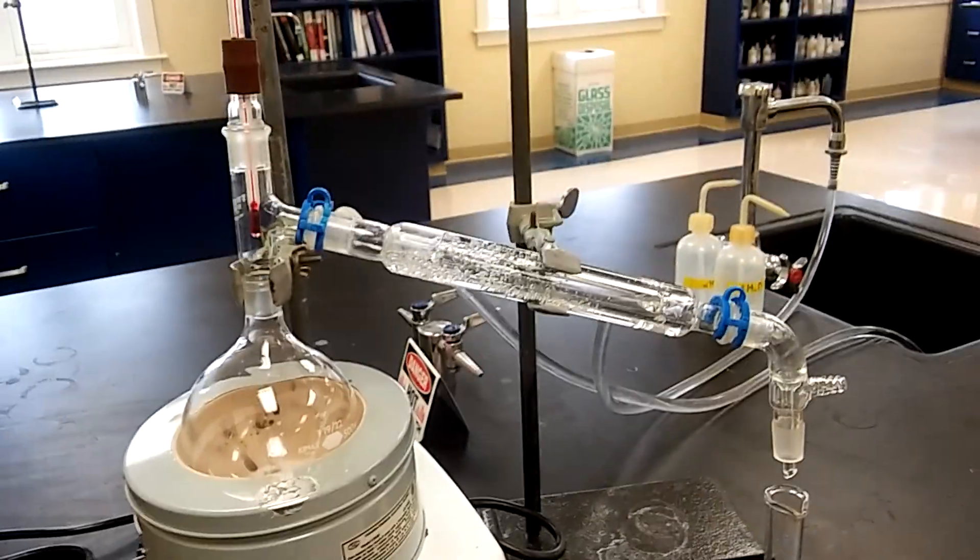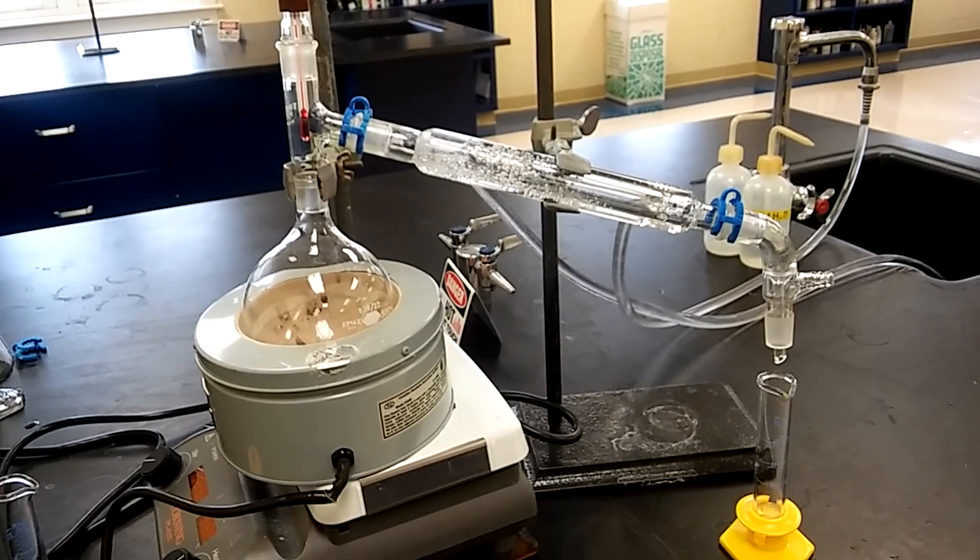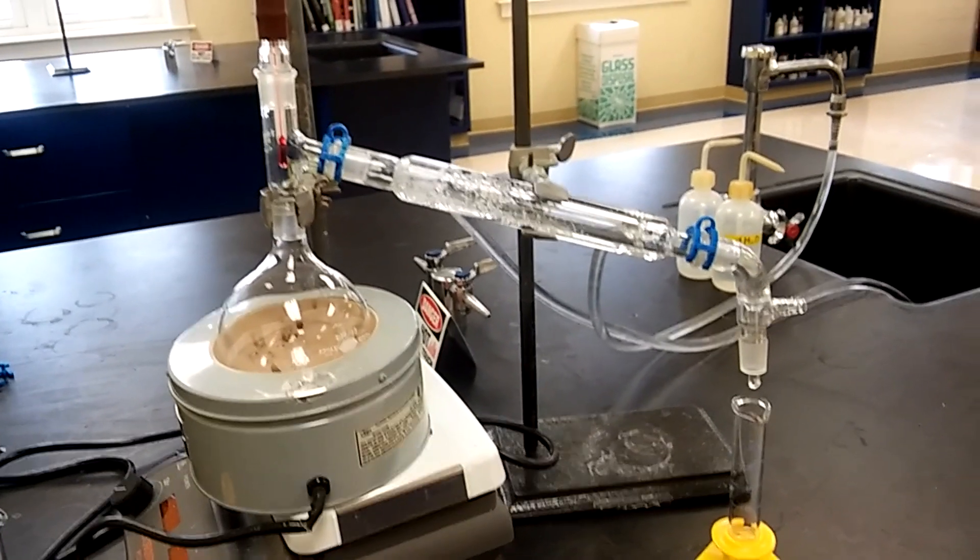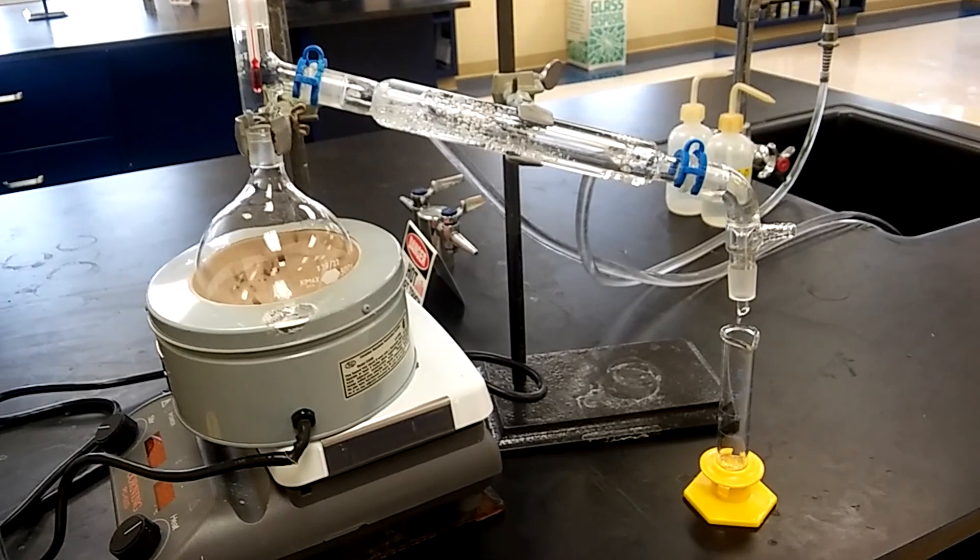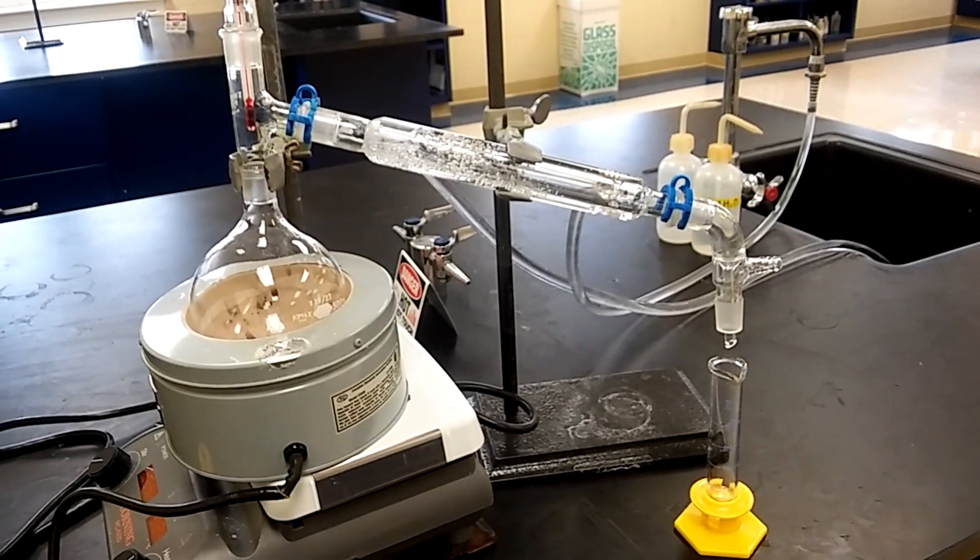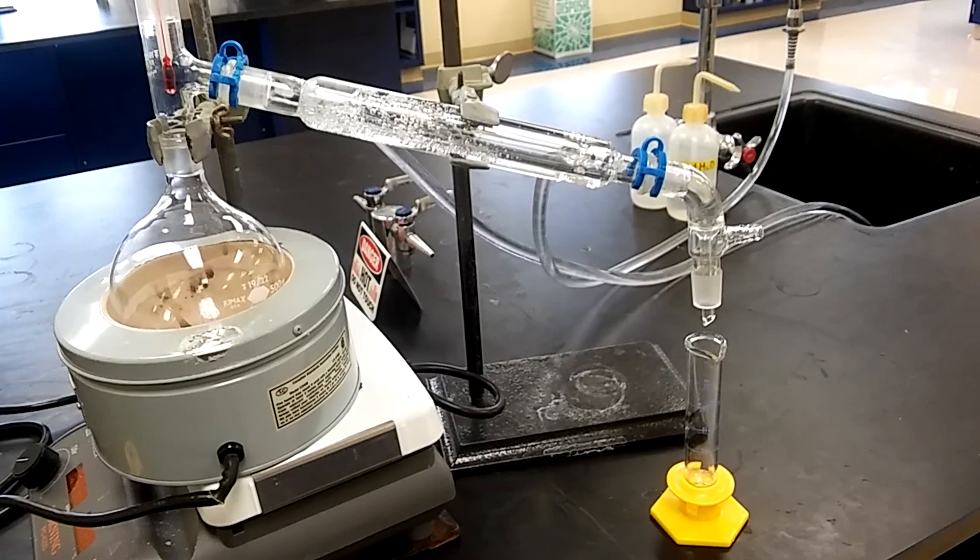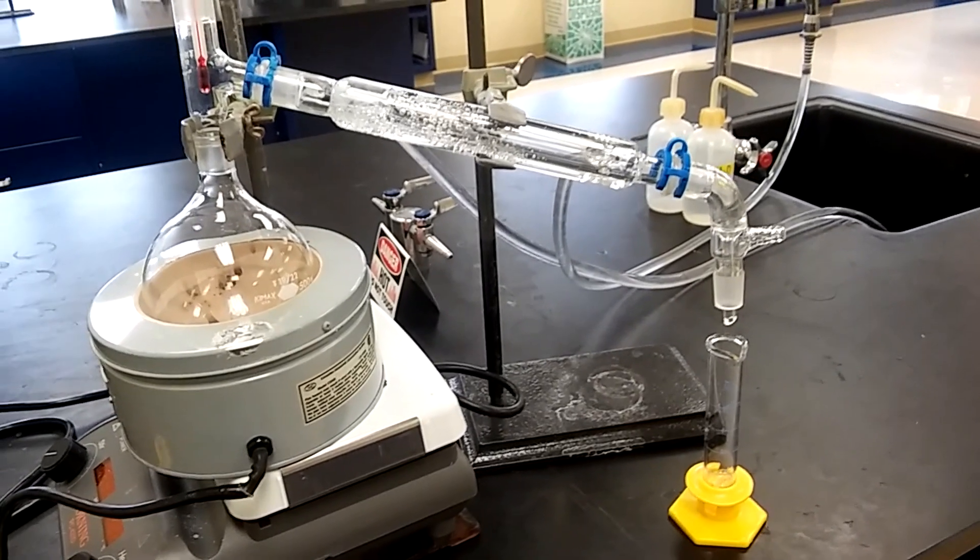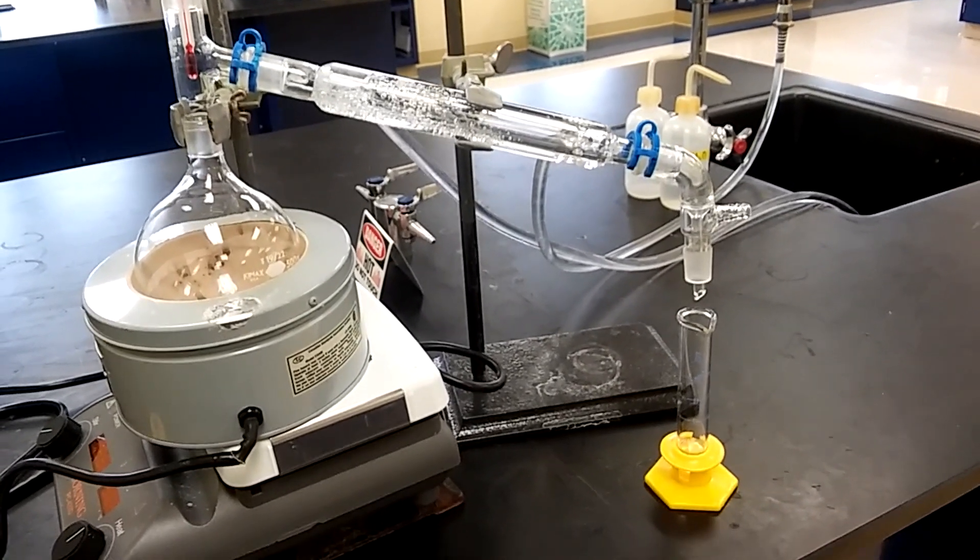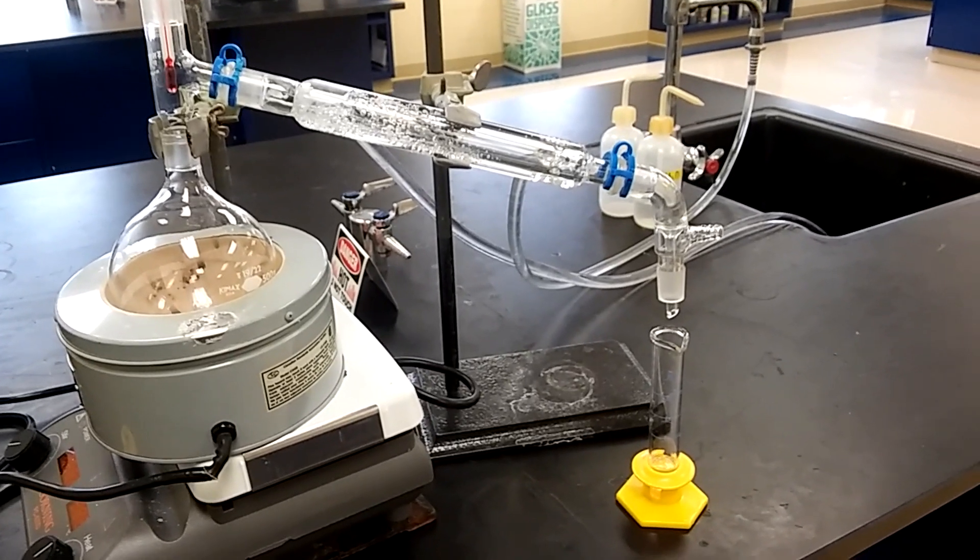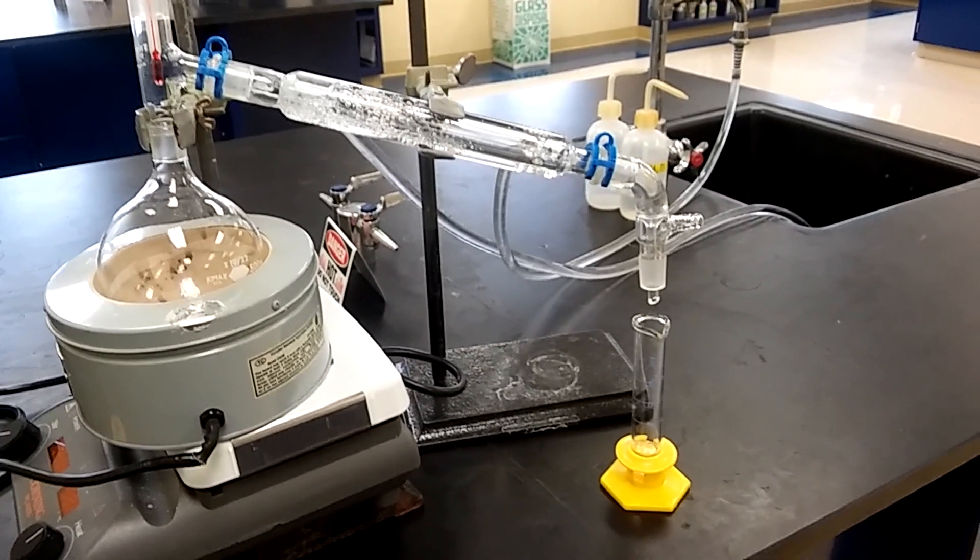You can follow the handout or my video, whatever works for you. We're collecting pure t-butyl chloride in that measuring cylinder. Once I get past 52 I'm gonna just put another beaker, turn off the heat and cut off the water supply. Then we can calculate the percent yield.